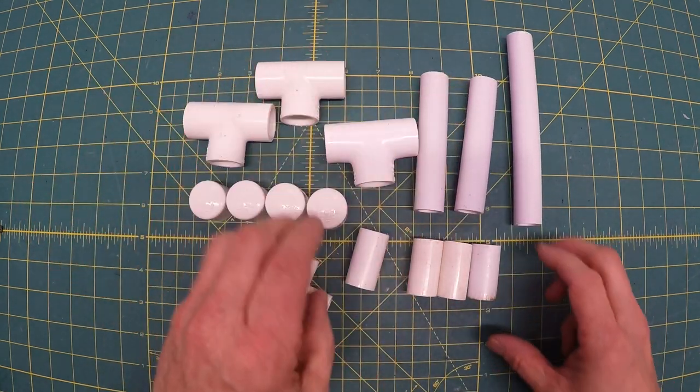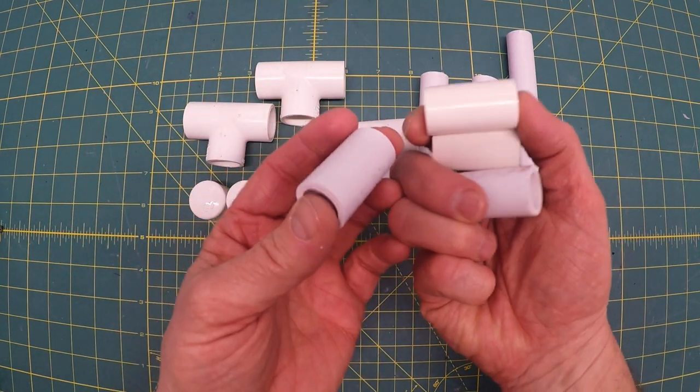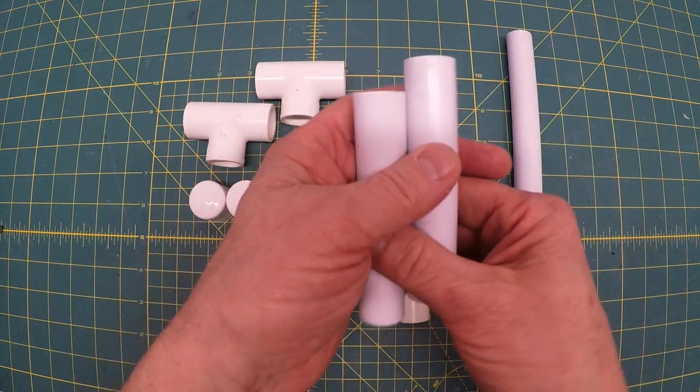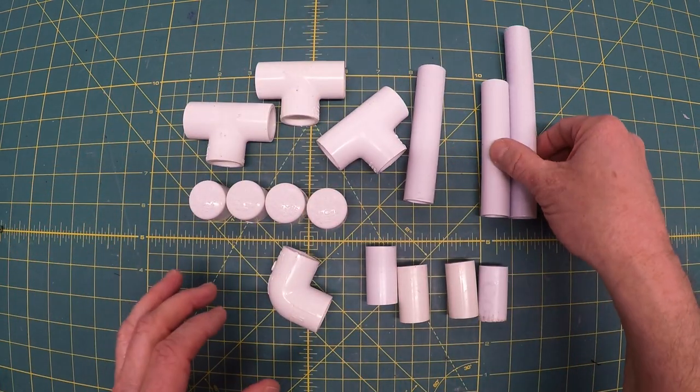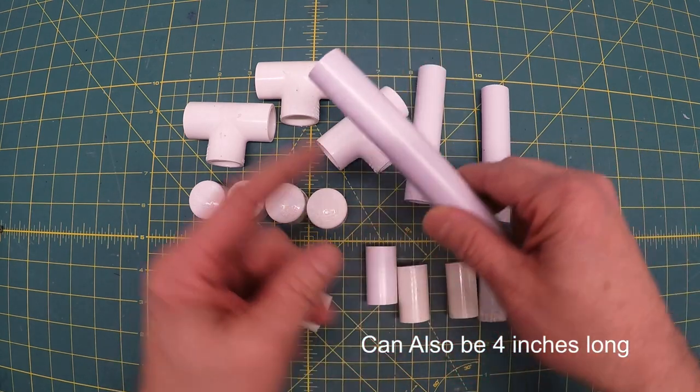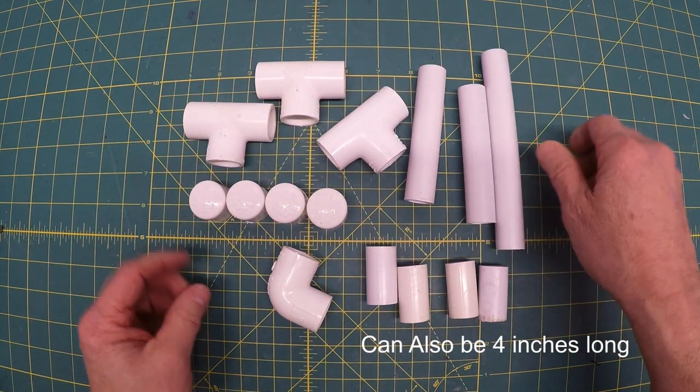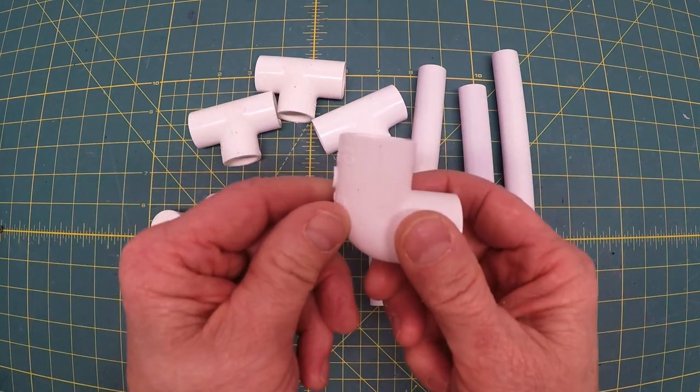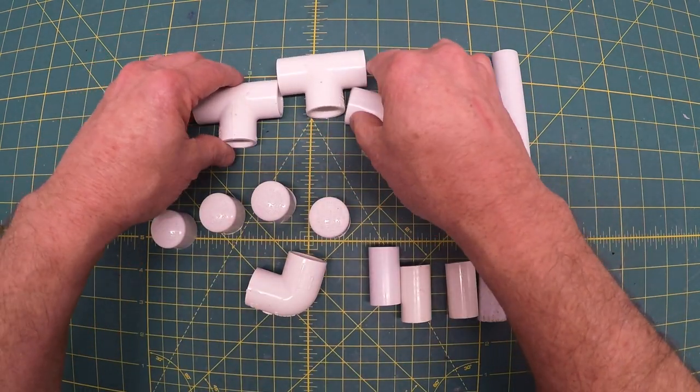You need four one and a half inch sections, two four-inch sections, one six-inch section. That's the neck that goes on. Four end caps, one elbow, and three T's.